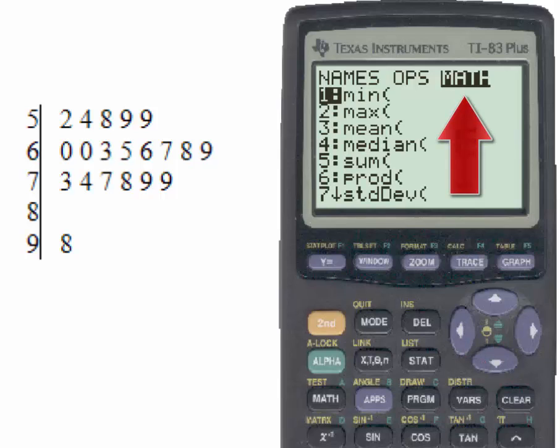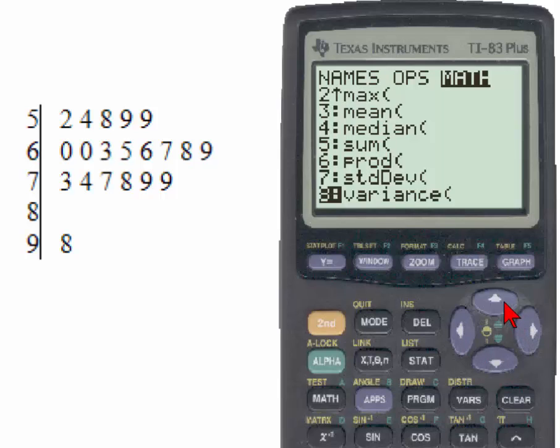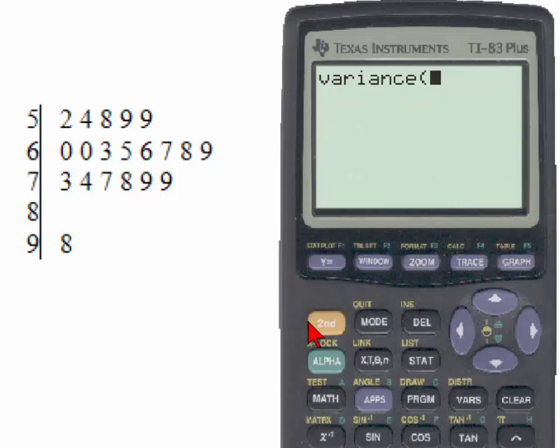At the bottom of the list, which we can get to by hitting the up arrow, we find number eight variance. Hitting the number eight and then putting in the L1 using the yellow second key and the number one and hitting enter, we have the variance.